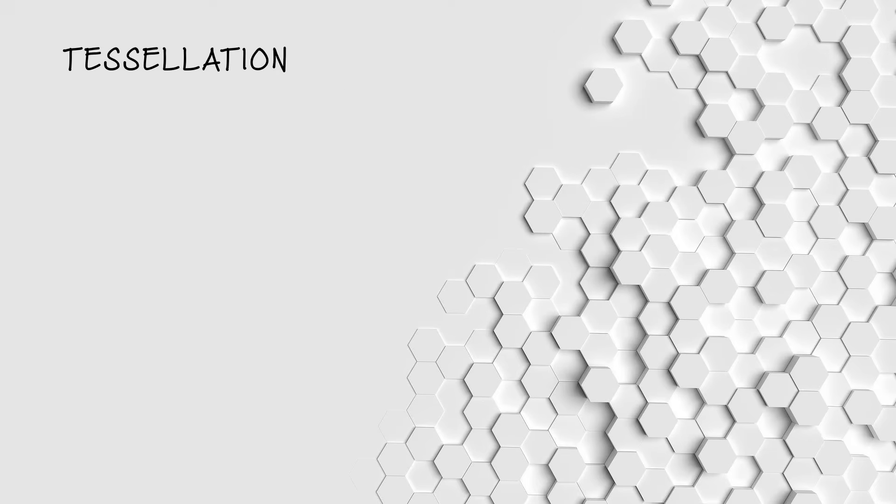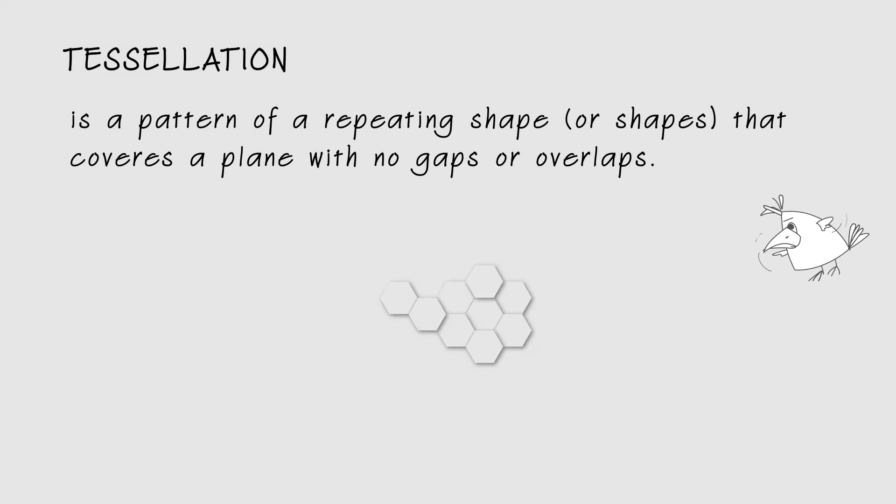Tessellation. If you see a pattern of a repeating shape that covers a surface without any gaps or overlaps, it is called a tessellation.